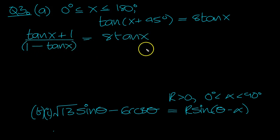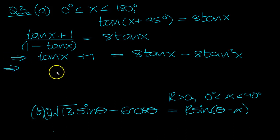So move this up to the top. So we get tan X plus 1 equals, and I'm going to move that up and expand the bracket at the same time. So it's 8 tan X minus 8 tan squared X. Move this over here now and we get 8 tan squared X minus 7 tan X plus 1 equals 0.